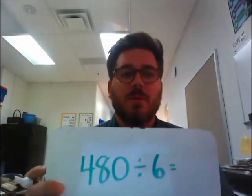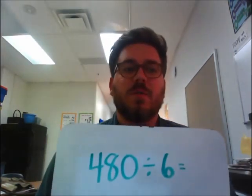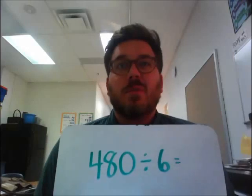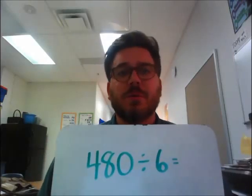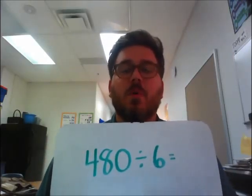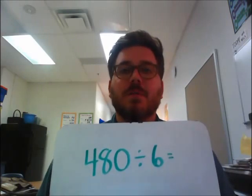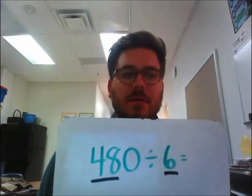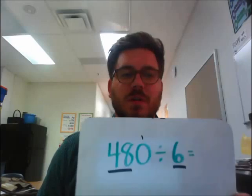So one of the first problems that we were given was 480 divided by 6. We could set that up using long division, but today we were working on using mental math. We find the base problem of 48 divided by 6, and then we just tally the 0 — we know that there's one 0 there.